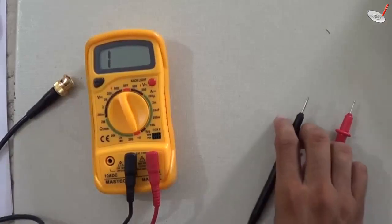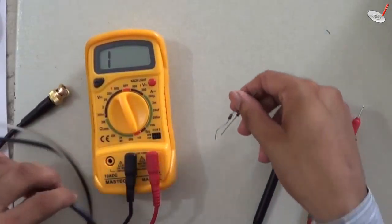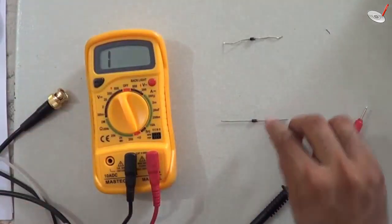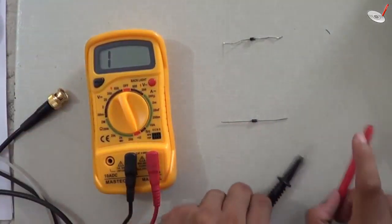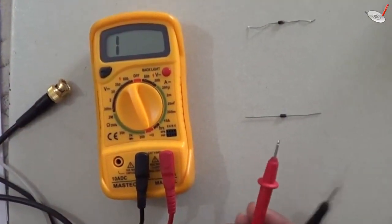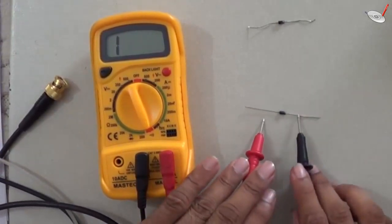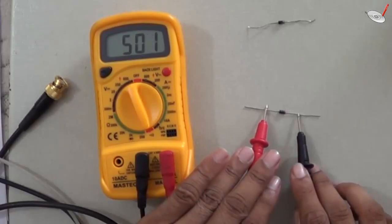After that, you can check the diode also. For the diode, you know the positive portion. This is the positive, this is negative. So you can check. This will show you the cut-in voltage, basically. If you connect like this, it is showing 501 millivolts.